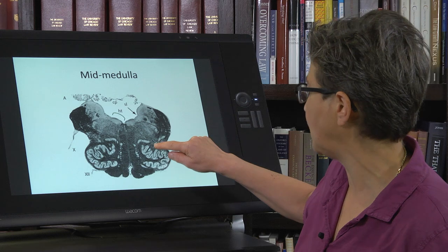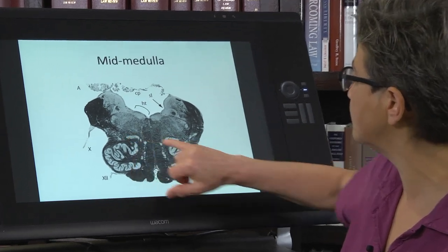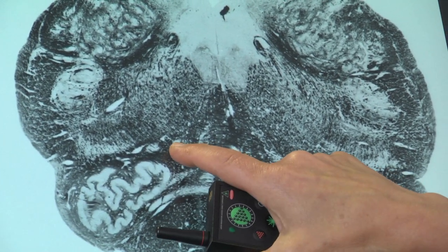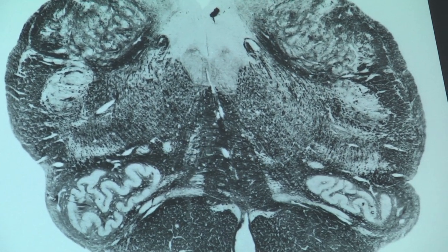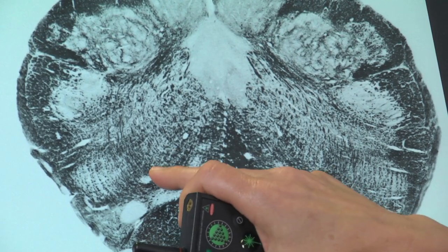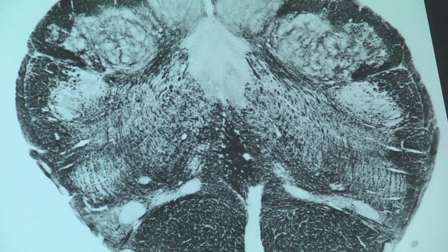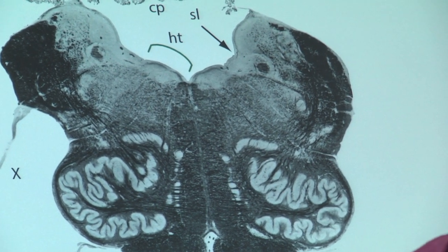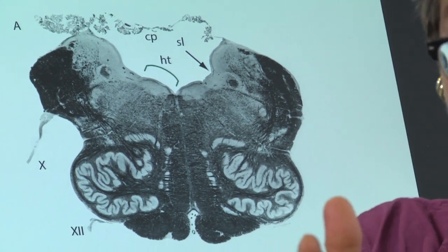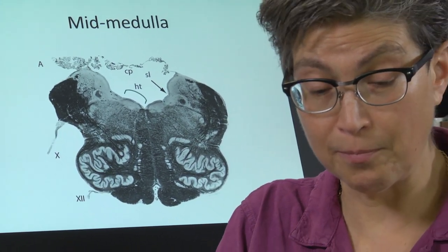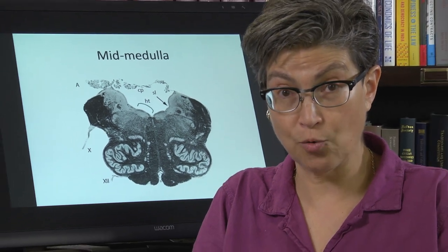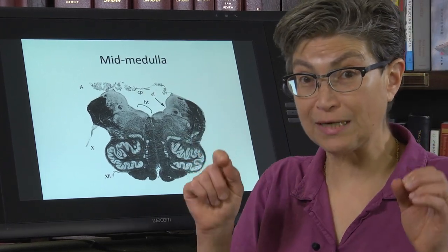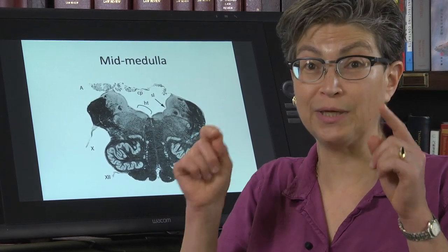The final structure to point out is this little white dot here — this is nucleus ambiguous. It was present more caudally as well. Nucleus ambiguous contains the motor neurons that innervate the branchial musculature of the upper airway. This is the area containing motor neurons critical to swallowing and talking.